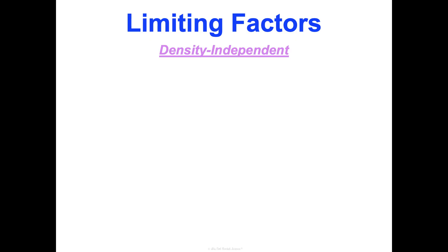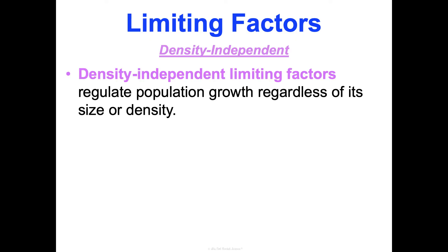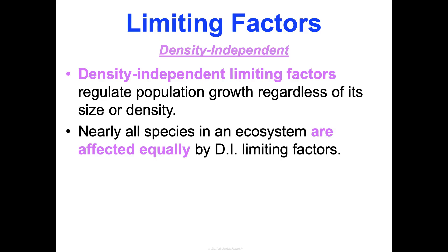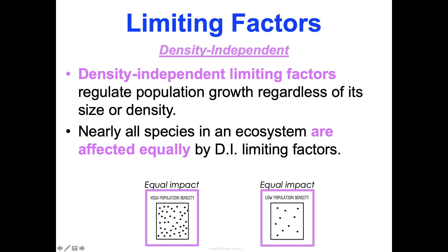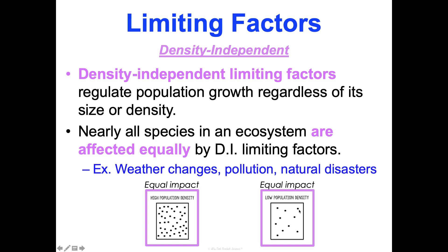Density independent limiting factors have an impact that is independent of population density — they regulate population growth regardless of whether it's a dense city or a small town. All species in an ecosystem are equally affected. Examples include weather changes, pollution, and natural disasters. An earthquake doesn't get bigger when it encounters more living things — it affects densely and sparsely populated areas alike. That's what we mean by a density independent limiting factor, and that's your overview of population ecology.